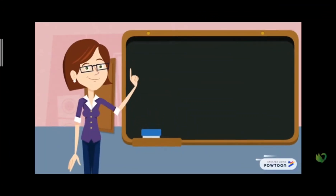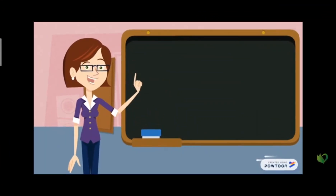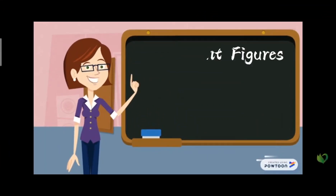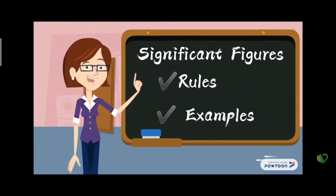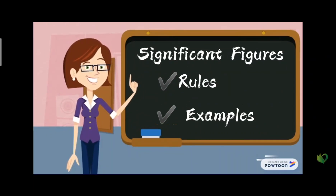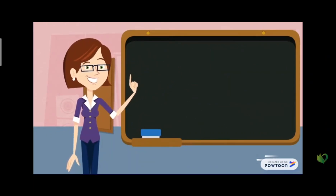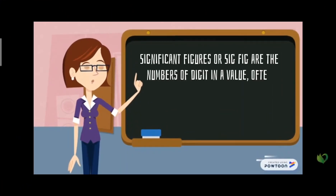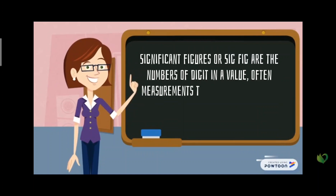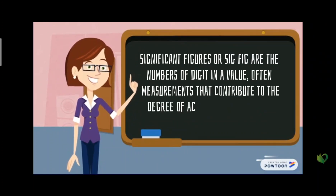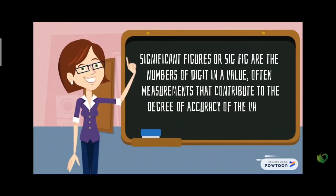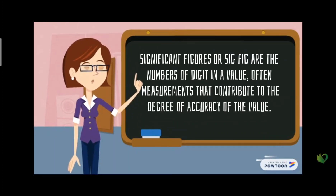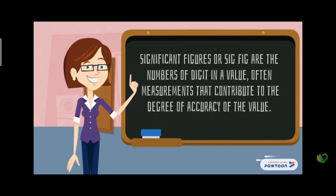In this video, we will talk about significant figures, the rules, and some examples. Significant figures, or sig figs, are the number of digits in a value — often measurements — that contribute to the degree of accuracy of the value. And of course, there are rules.